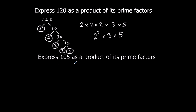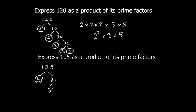Now express 105 as a product of its prime factors. Same thing — we're going to break 105 down until we've only got prime numbers left. 105 is in the 5 times table, and that is 5 times 21. 5 is prime, 21 is not. 21 is 3 times 7, and they are both prime.